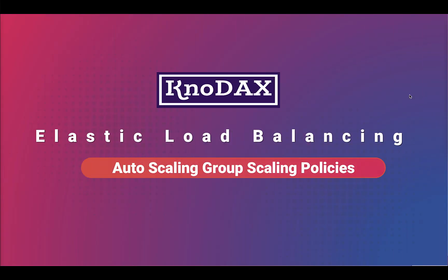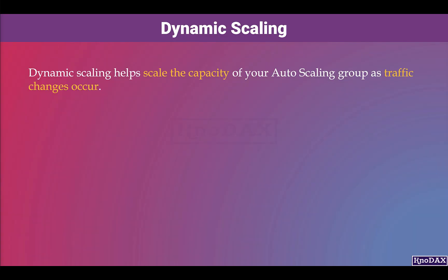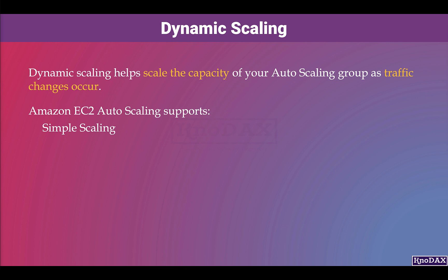Welcome back. This video is about Auto Scaling Group Scaling Policies. Dynamic Scaling helps scale the capacity of your auto scaling group as traffic changes occur. Amazon EC2 Auto Scaling supports Simple Scaling, Target Tracking Scaling, and Step Scaling.